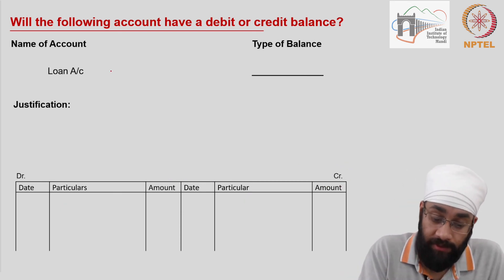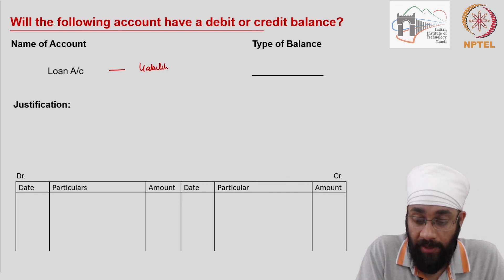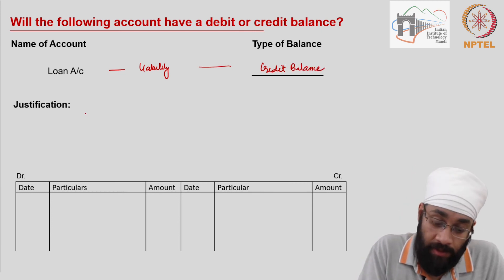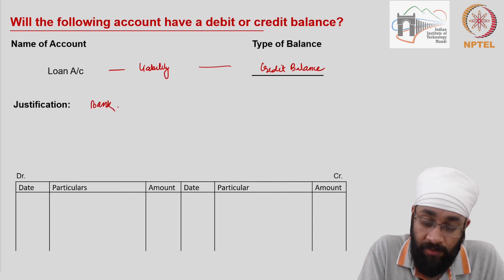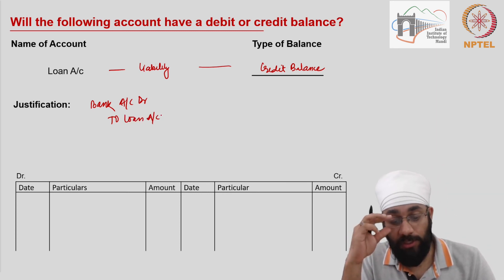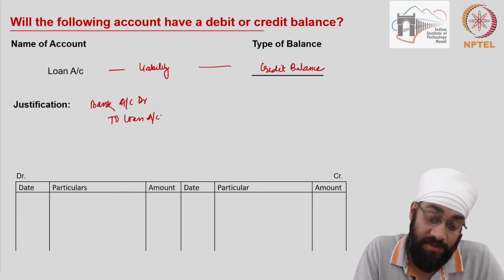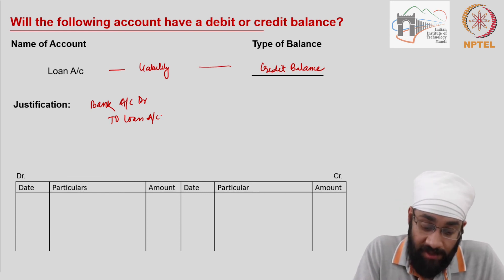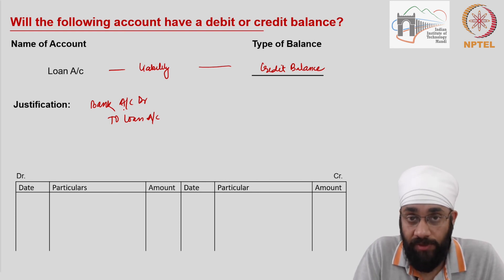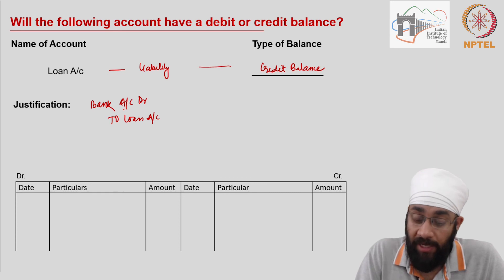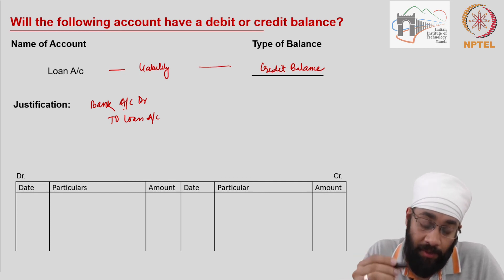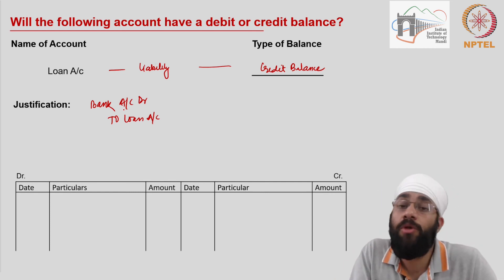Let's look at a loan account. A loan is also a liability, and all liabilities will always have a credit balance. When you take the loan, the entry is: bank account debit to loan account. Short-term and long-term loans are both liabilities with the same transactions. You could repay in installments or in one lump sum. It is also possible that unpaid interest gets added to the principal.